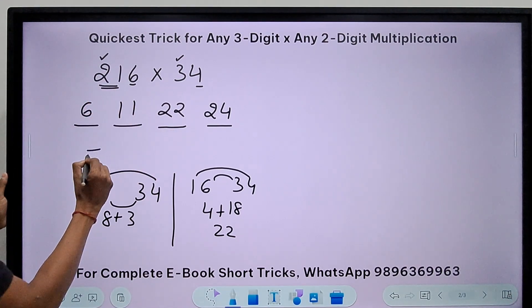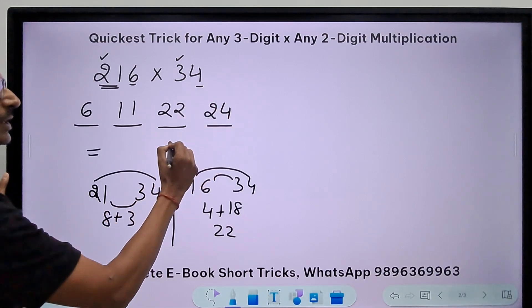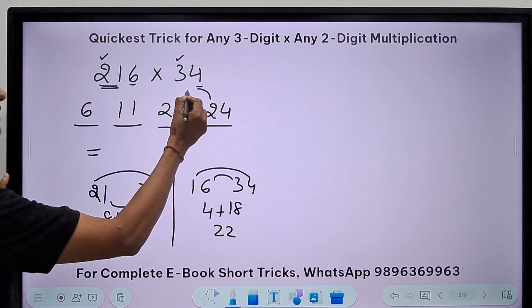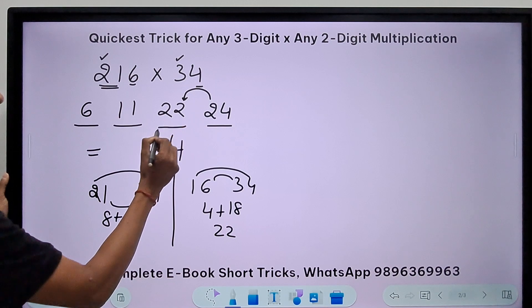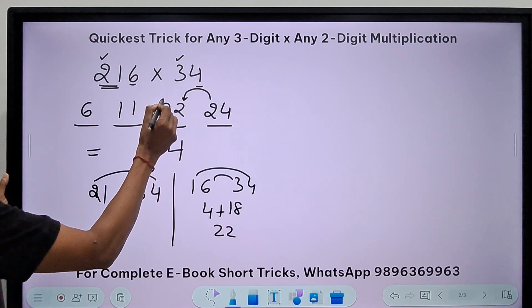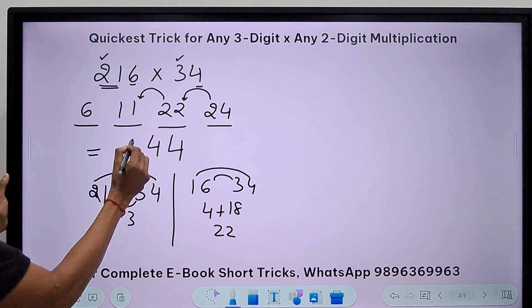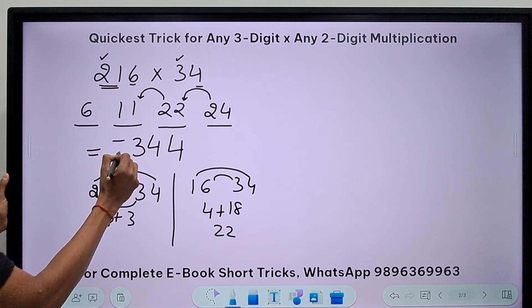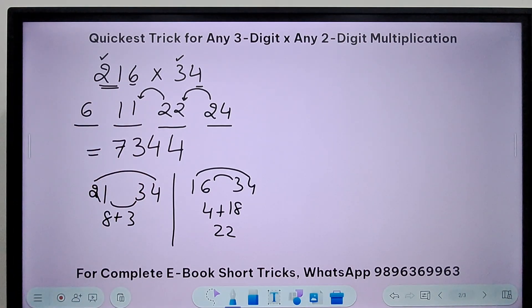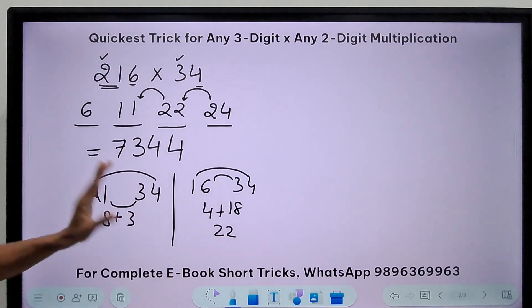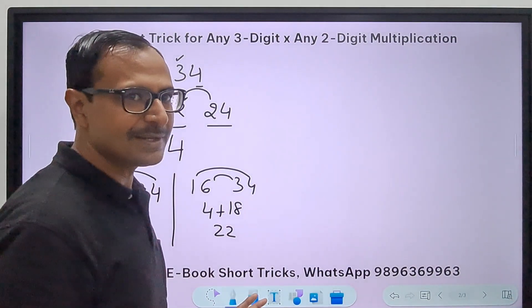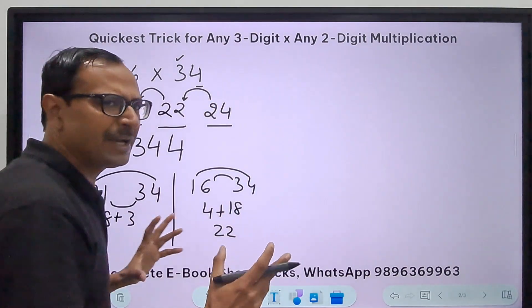The next step has your answer. Retain the unit digit 4, carry forward the tens digit. So 22 plus 2 is 24. So 4, 2 again makes 11 as 13. So 3 and a 1 carry makes it 7. So 7344 is the answer. Isn't that amazing? I think I took like one minute explaining it to you slowly.